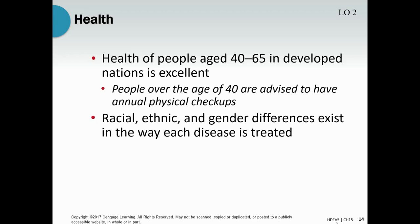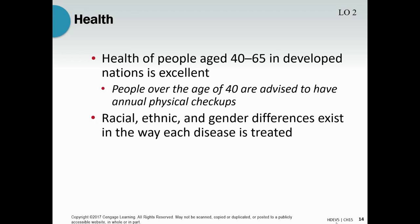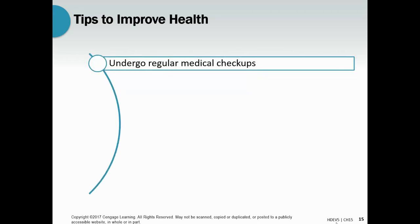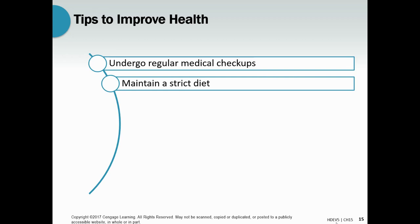If you're part of the majority group you tend to do better than if you're part of a minority group. A tip to improve health: undergo regular medical checkups — and again, if you have insurance and make good money you're more likely to get those. Maintain a strict diet — if you make good money and have time to come home and prepare a good meal you get to live a better life, but if you come home tired or work two jobs, there's a chance you won't have as good a diet.